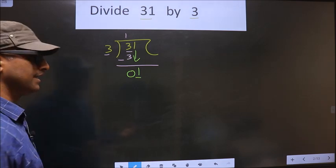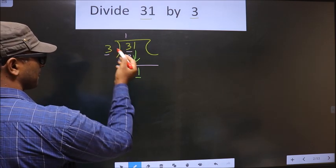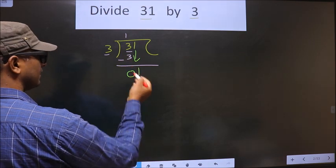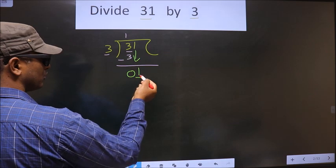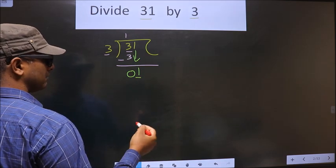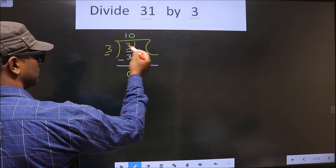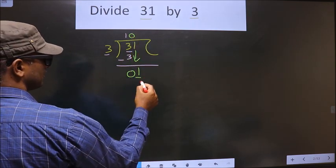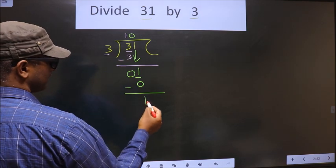Instead, what you should think is, what should we multiply to this number to get a number here? If I multiply with 1, I get 3 which is more than 3. So I cannot multiply with 1. So we should multiply by 0. So 3 into 0 is 0. So now you subtract, you get 1.